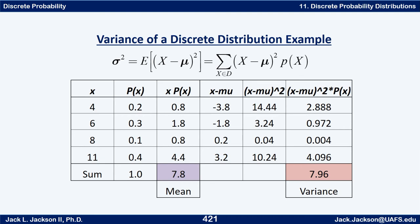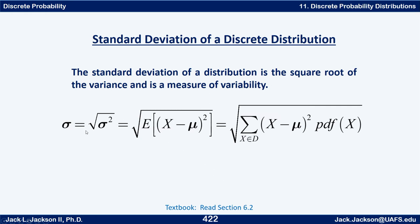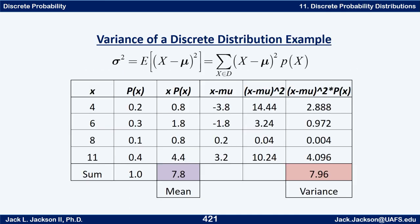Okay, now that you're back. What about the standard deviation? Well, that's pretty easy. Just take the square root of the variance. So the variance is the expected value of (X minus μ) squared. Standard deviation is the square root of that. So in this example here, that would be the square root of the 7.96, which would be the standard deviation.